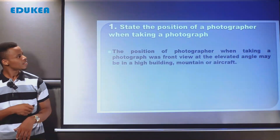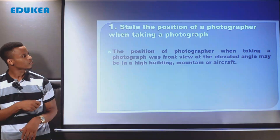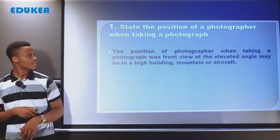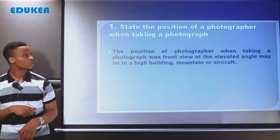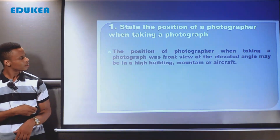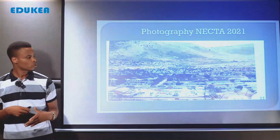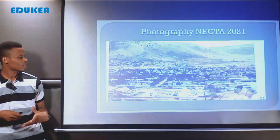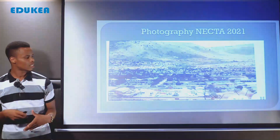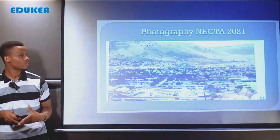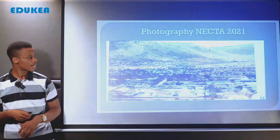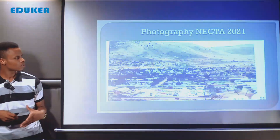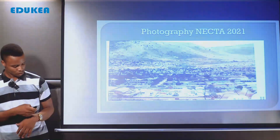The first question asks to state the position of the photographer when taking the photograph. The answer is that the position of the photographer was the front view at an elevated angle — maybe in a high building, or mountain, or aircraft. We say front view because the photographer was at an elevated position, and that is why we see some top of the pictures and side view.